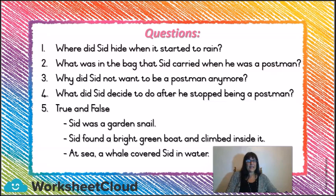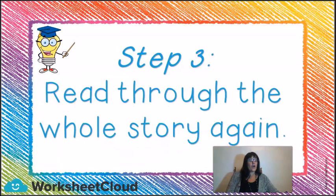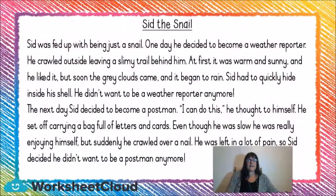So we've done step one — we've read through the story. Step two — we've read through the questions. And now step three: it says we have to read through the whole story again. Children, this is very important because you actually forget what you read sometimes. So it's important to go back through the story, because now you know the questions. Let's go through the story again.